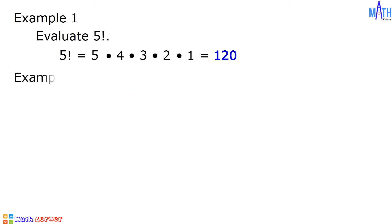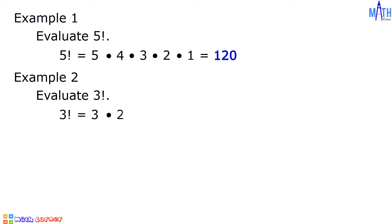Example number 2: evaluate 3 factorial. 3 factorial is equal to 3 times 2 times 1, which is equal to 6.